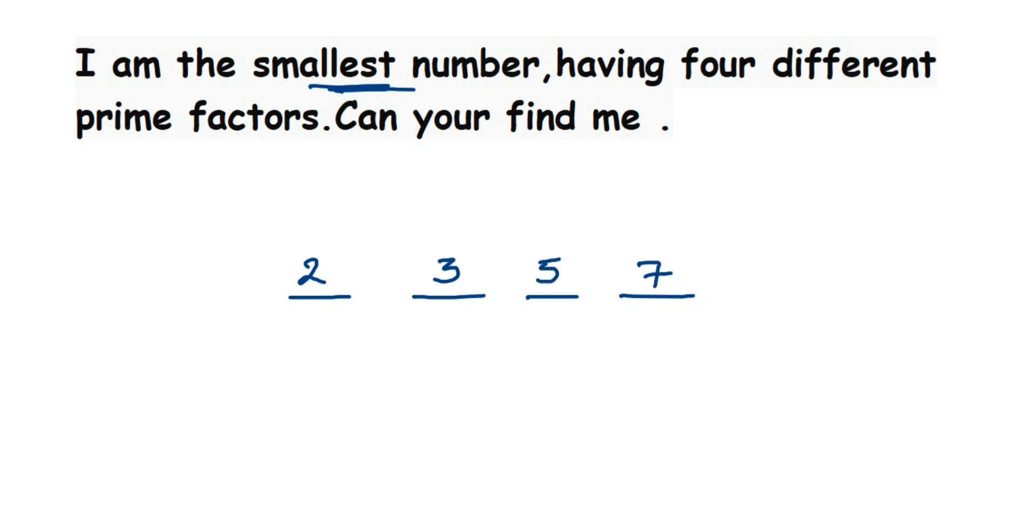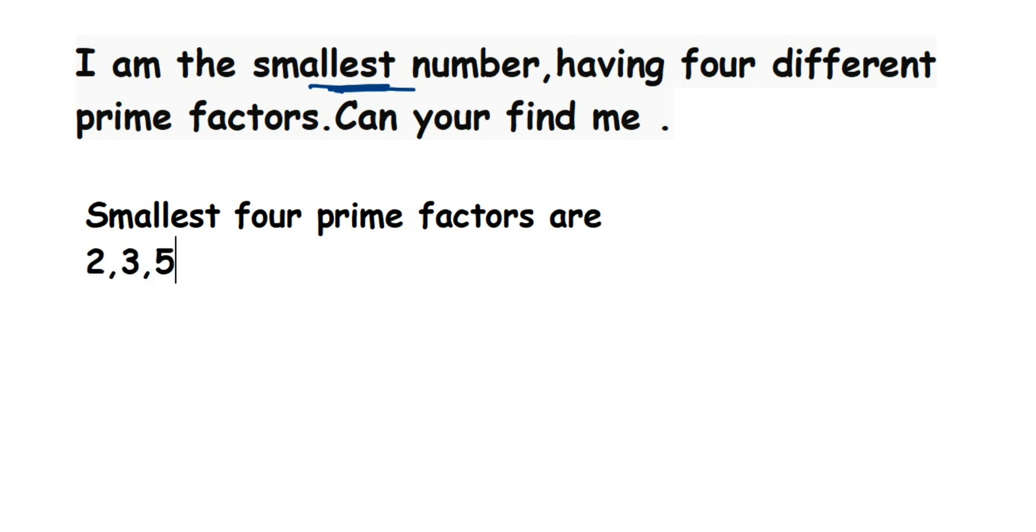If you multiply these four prime numbers, you'll get the smallest number. The smallest four prime factors are 2, 3, 5, and 7. To find the answer, you just multiply them.